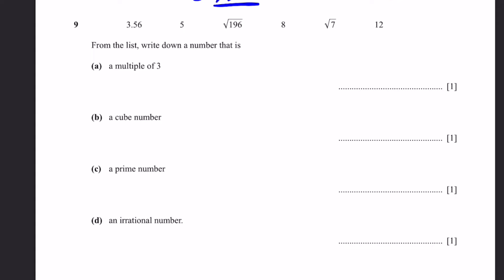Question 9: From the list 3.5, 65, root 196, 8, root 7, 12, write down a number that is: Part A, a multiple of 3. That's simply 12, which is 3 times 4. Part B, a cube number. That's 8, which equals 2 cubed. Part C, a prime number. The only prime number here is 5. Decimals cannot be counted as prime numbers. Irrational numbers can't be prime. Therefore the only answer is 5.